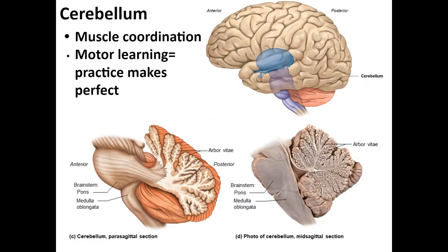The cerebellum, the most posterior-inferior brain region, is responsible for motor learning — this is where 'practice makes perfect' comes from. Repeatedly shooting a basketball, practicing an instrument until your fingers know exactly where to go, or typing on a keyboard are all regulated by the cerebellum, which stores motor information for more efficient future use.